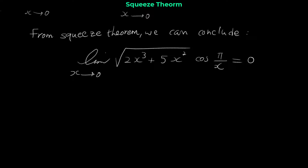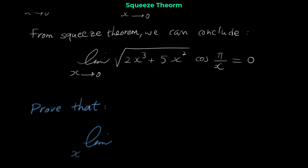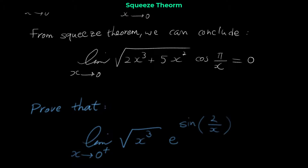This was one example of the squeeze theorem. Let me show you another example to get more familiar with the squeeze theorem or sandwich theorem. Now we want to prove the following: prove that the limit as x approaches 0 from the right of √(x³) · e^(sin(2/x)) is equal to 0.